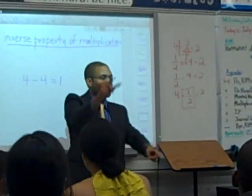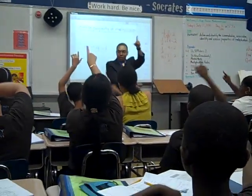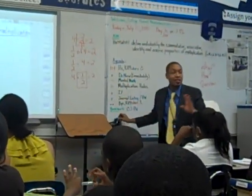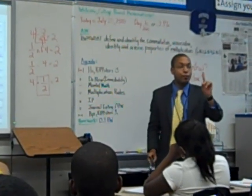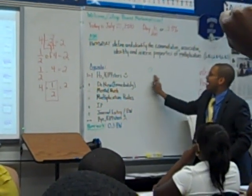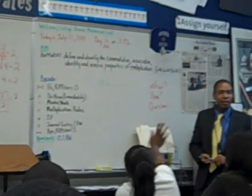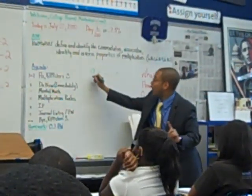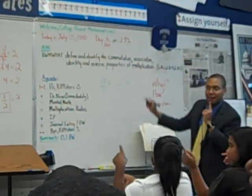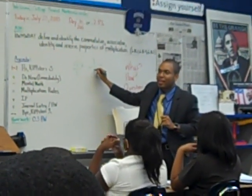Everybody say: the reciprocal. One more time with your hands — the reciprocal. And what that means is this: you first have to see the number as a fraction. If you don't see it as a fraction, make it into one. Tell me what 9 is as a fraction. 9 over 1. Take the reciprocal of 9 over 1 — 1 over 9.